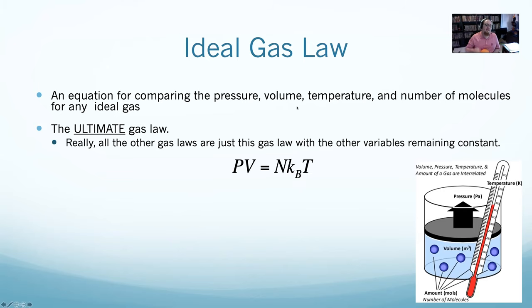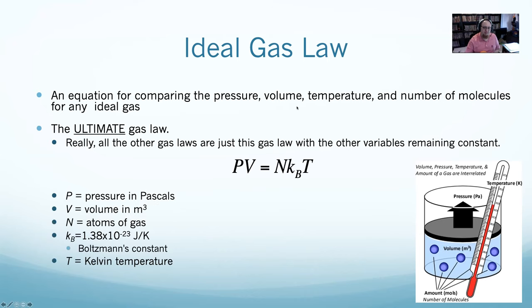The ideal gas law says the pressure of a gas, which is in Pascals, times the volume of a gas in meters cubed, equals the number of atoms or molecules times a constant known as Boltzmann's constant. Boltzmann's constant is 1.38 times 10 to the negative 23rd joules per Kelvin, times the temperature in Kelvin. That is the ideal gas law.